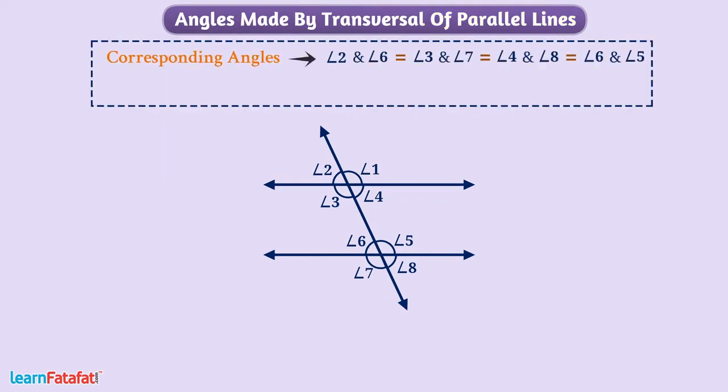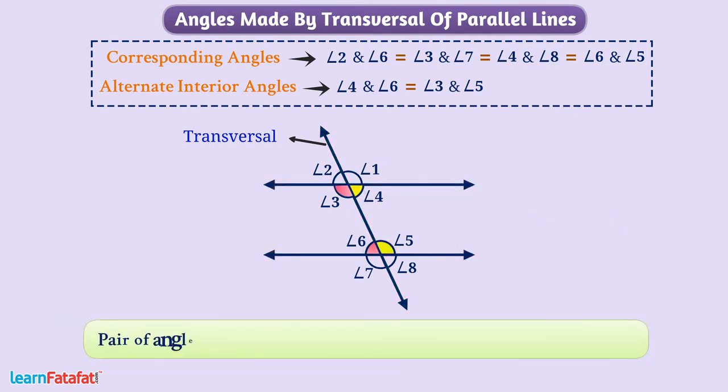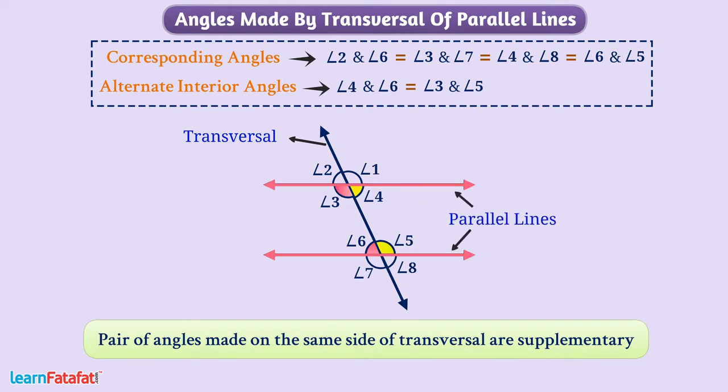The corresponding angles and alternate interior angles made by transversal of parallel lines are equal, as well as the pair of angles made on the same side of transversal are supplementary. With the use of one of these properties, we can construct a parallel line to a given line through a point not on the line. Let's construct it.